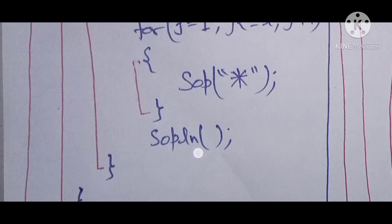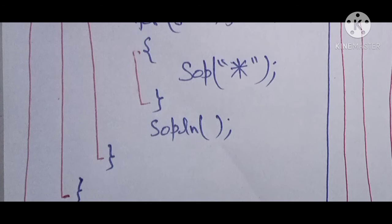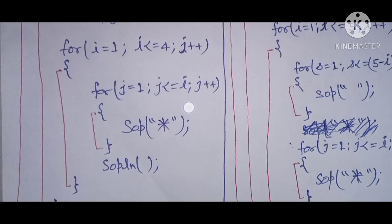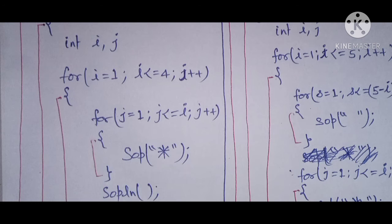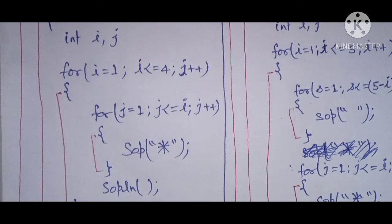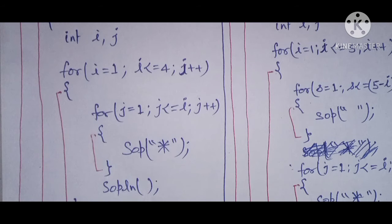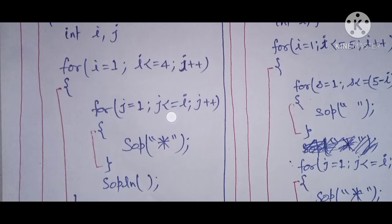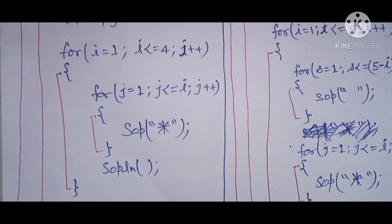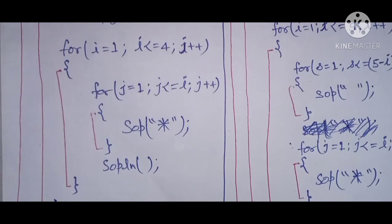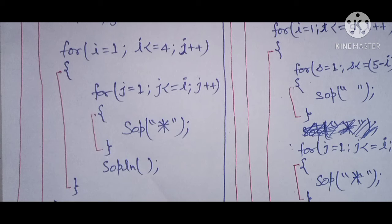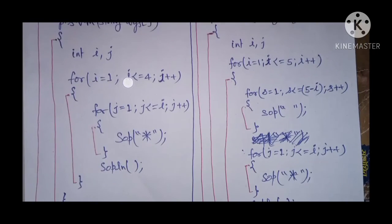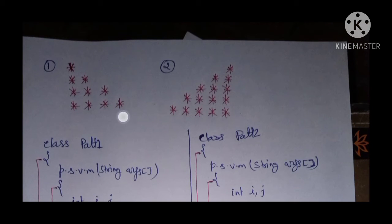After the line change, control returns to the outer loop. `i++` makes `i = 2`, so the inner loop now runs from 1 to 2, printing 2 stars. Then `i = 3` gives 3 stars, and this continues until `i` is no longer less than or equal to 4. After that, close the main method and close the class. This completes pattern 1.